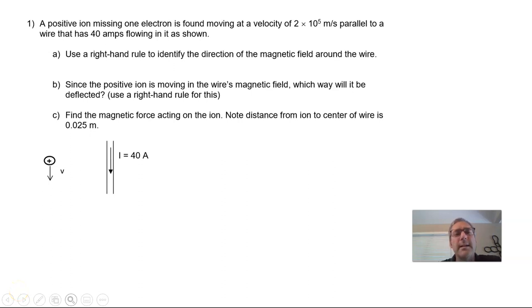This is problem number one in test number two review. A positive ion missing one electron is found moving at a velocity of 2 times 10 to the fifth meters per second parallel to a wire.